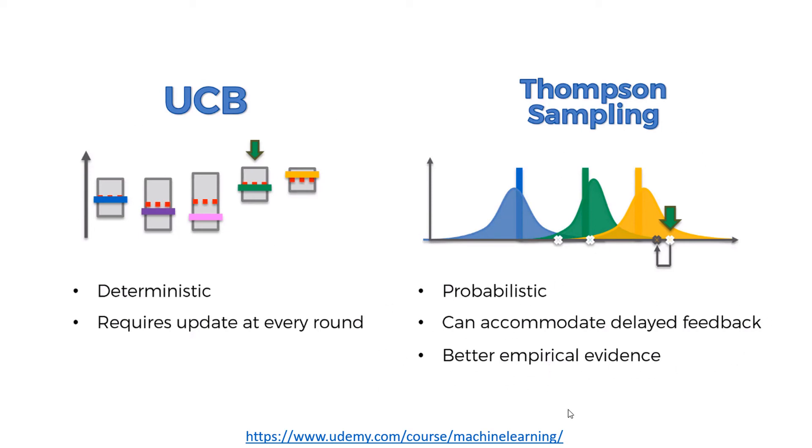It can accommodate delayed feedback and has better empirical evidence. You'll find research by doctors and master's degree holders that shows Thompson Sampling has better empirical evidence compared to UCB. So overall, I think it's a better idea to stick with Thompson Sampling instead of UCB. However, you may find some applications where UCB is a better option for some reason, but the professor in the course I'm taking only mentioned these things here, which makes sense.